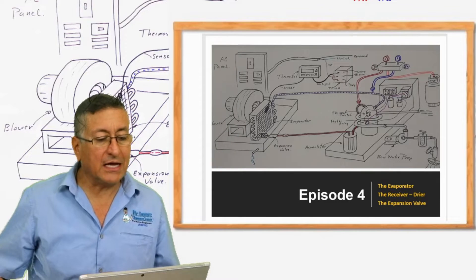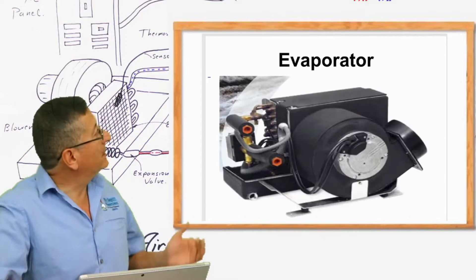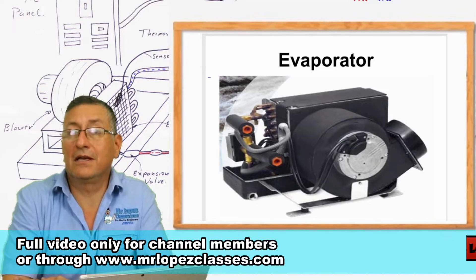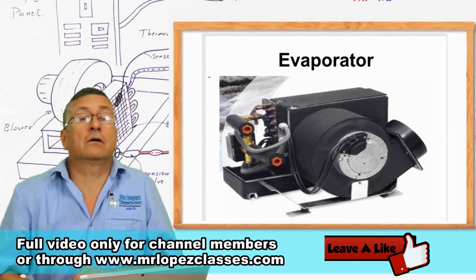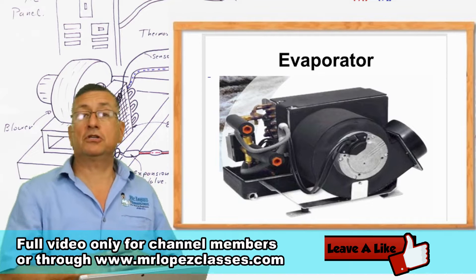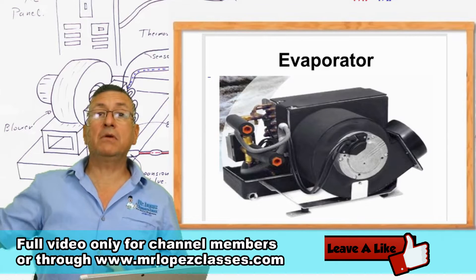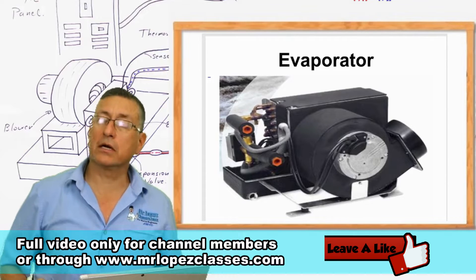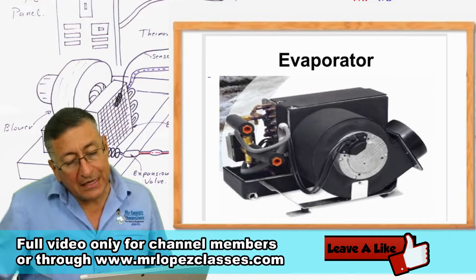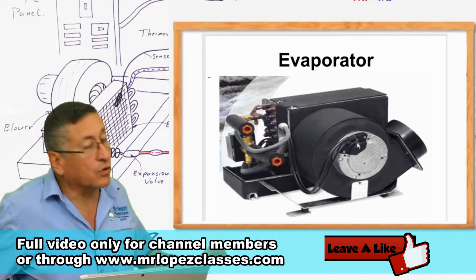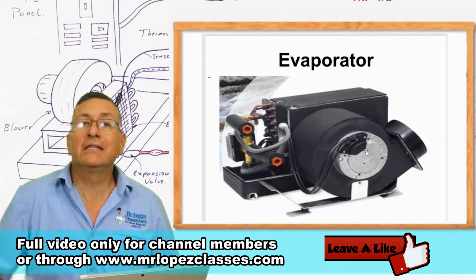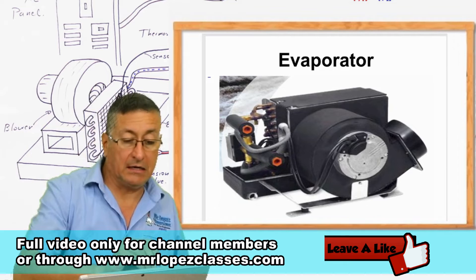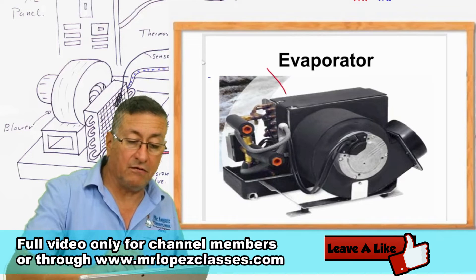This magic element is the evaporator. The evaporator is magic because it suctions air with ambient temperature from one side, and on the other side you receive cold air. This model suctions the air at ambient temperature — the air enters over there.